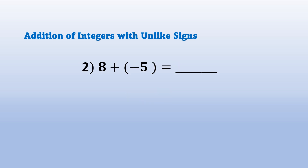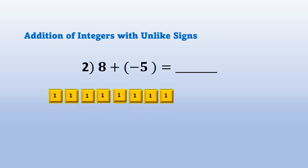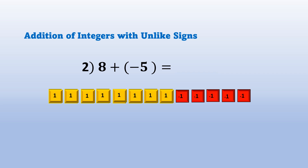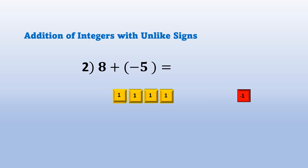Example number 2: 8 plus quantity negative 5 equals blank. If you notice, the numbers are the same from number 1, only that the signs are interchanged. We have 8 yellow tiles to represent positive 8 plus 5 red tiles to represent negative 5. Just like in example number 1, we will take away by pair the yellow tiles and the red tiles — 1, 2, 3, 4, 5. Three yellow tiles are left. So, 8 plus quantity negative 5 is equal to 3.